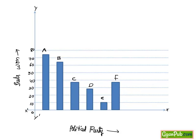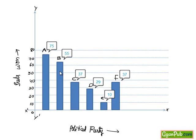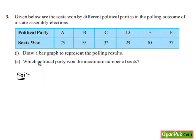Now let's move on to question number 2. Which political party won the maximum number of seats? Seeing the graph, the length of the bar graph for A is larger. Political party A has won the maximum number of seats.